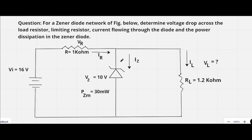We have to determine the value of VL, the voltage drop across this load resistor. As you can see, the RL has 1.2 kilo-ohm value. So let's solve the question.